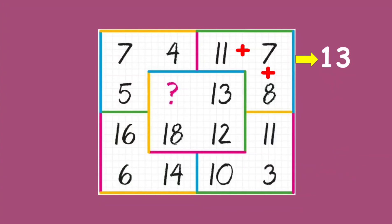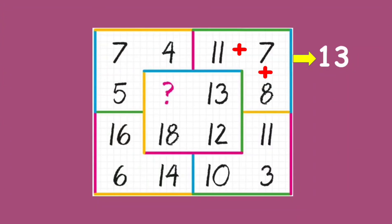So we have to follow the same pattern to find the missing number on the next corner. Let us add the numbers on the last corner. When we add these three numbers, we get 16.